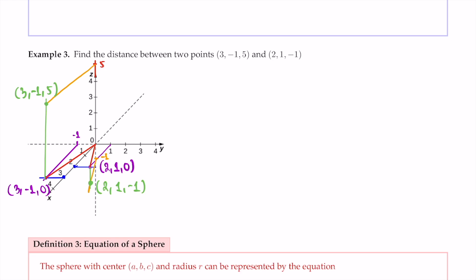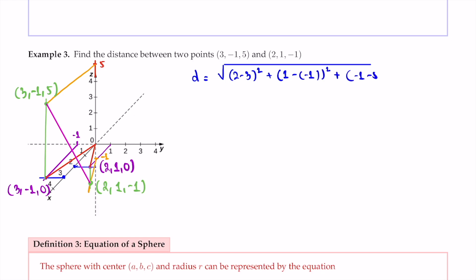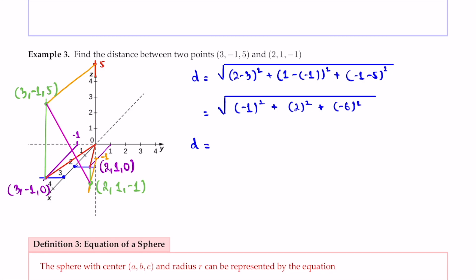We've located both points in 3D space. The distance between them is: d = √[(2-3)² + (1-(-1))² + (-1-5)²] = √[(-1)² + 2² + (-6)²] = √[1 + 4 + 36] = √41.